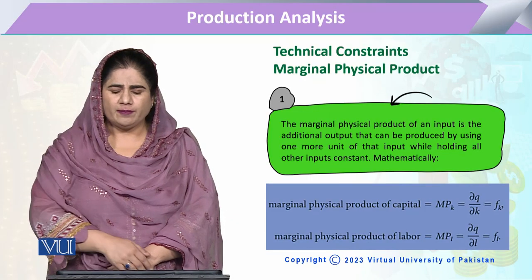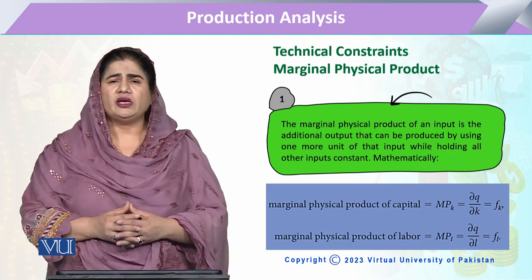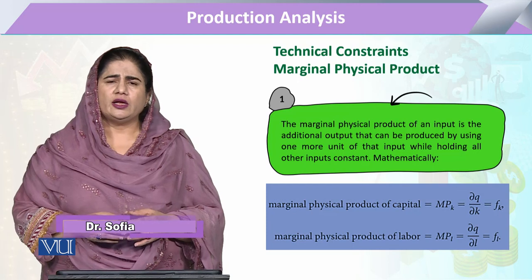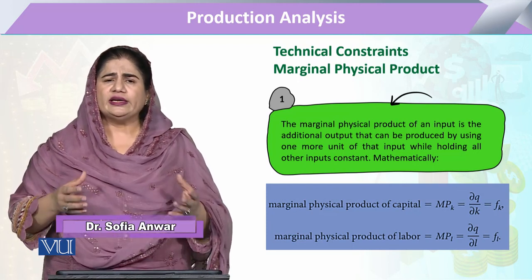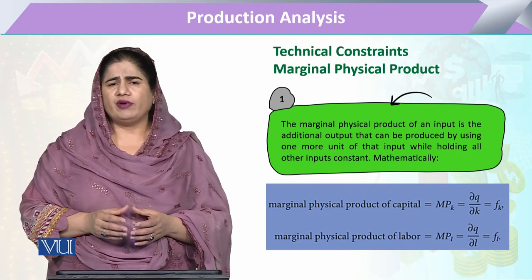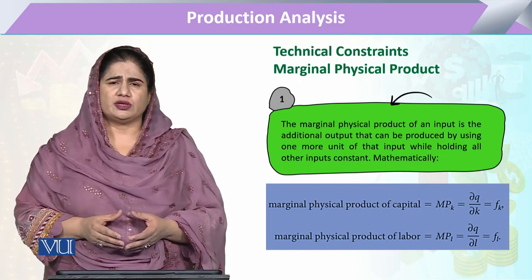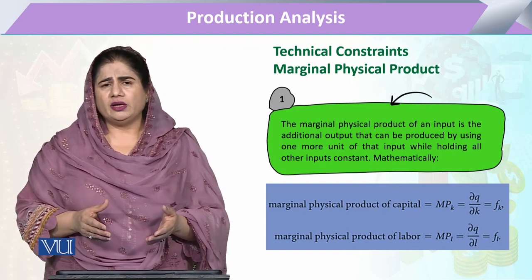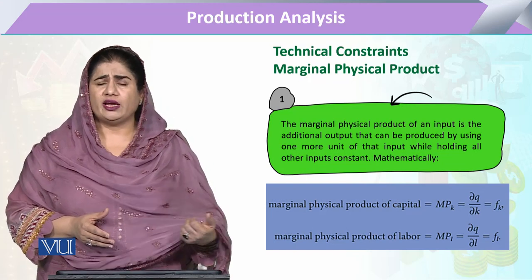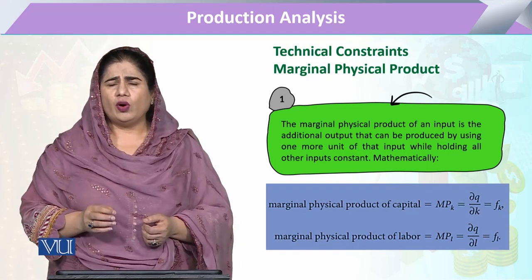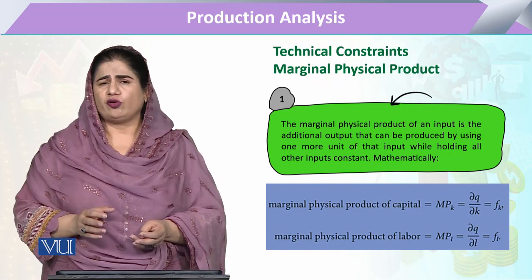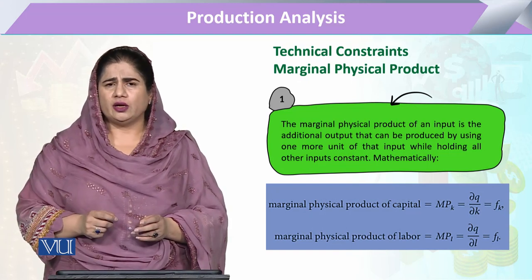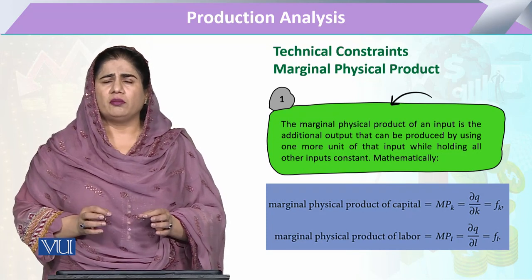Chapter: production analysis, and we are going to study marginal physical product. What do we mean by the marginal physical product? Basically, when we utilize various inputs, we do not do so without any decision or conscious effort. When an entrepreneur decides a certain production process, it decides how many or how much of the inputs to utilize — for example, 4 or 5 units and so on. For one additional unit of input, the relative change in total output associated with only that additional input is called the marginal physical product.